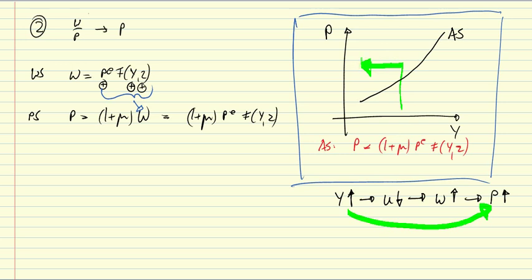I emphasize that because often at this point students make the mistake to believe that higher prices induce firms to increase their supply. That is not the mechanism that underlies the aggregate supply curve. Causality runs from Y to P through unemployment and the wage bargaining process.